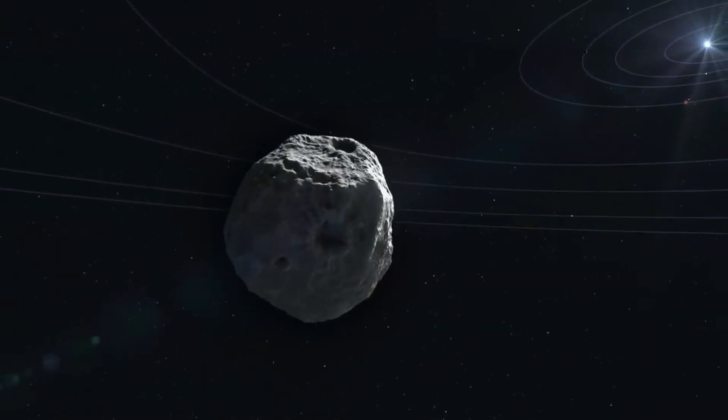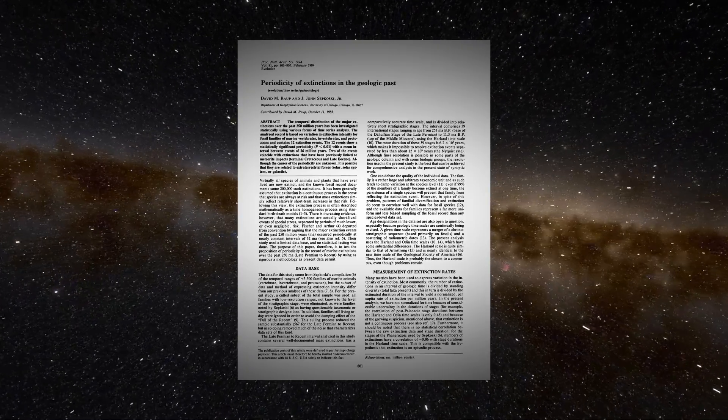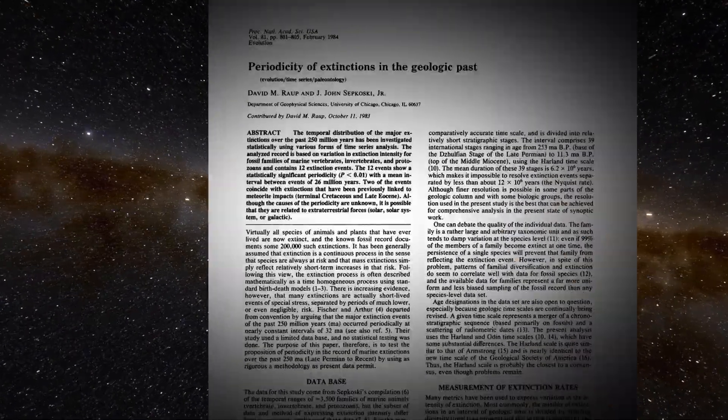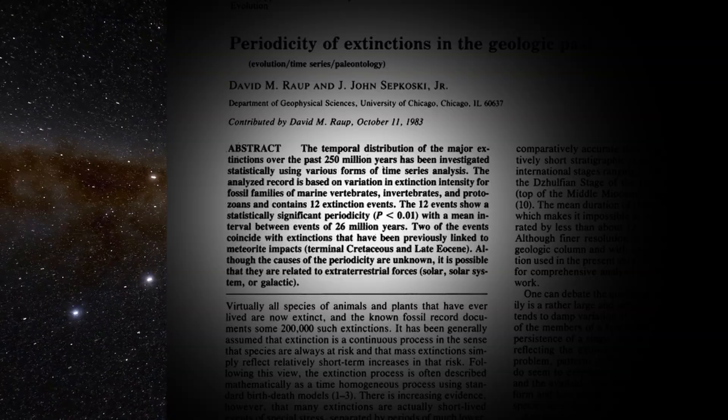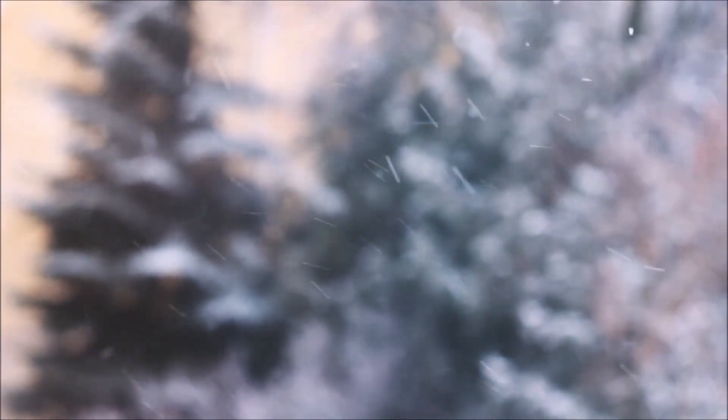This would cause mass bombardments and impacts on the planets of the solar system. The 1983 paper, Periodicity of Extinctions in the Geologic Past, posits that most mass extinctions in the last couple hundred million years seem to follow a roughly 26 million year pattern.